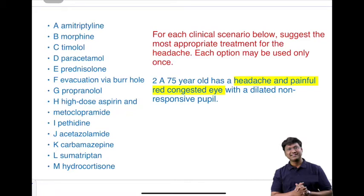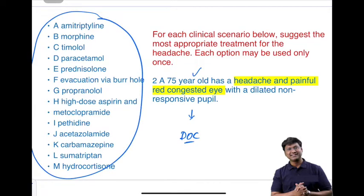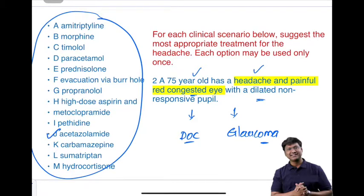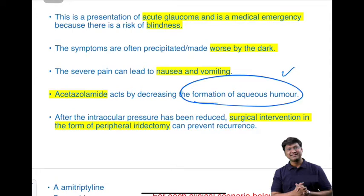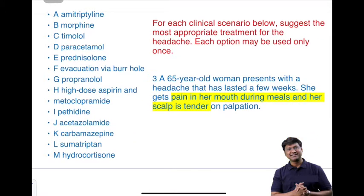The seventh scenario: a 75-year-old has headache and a painful, red, congested eye with a dilated non-responsive pupil. This is suggestive of glaucoma. The drug of choice is acetazolamide, which decreases the formation of aqueous humor. After medical management, surgical intervention — peripheral iridectomy — is required to prevent recurrence of acute glaucoma.